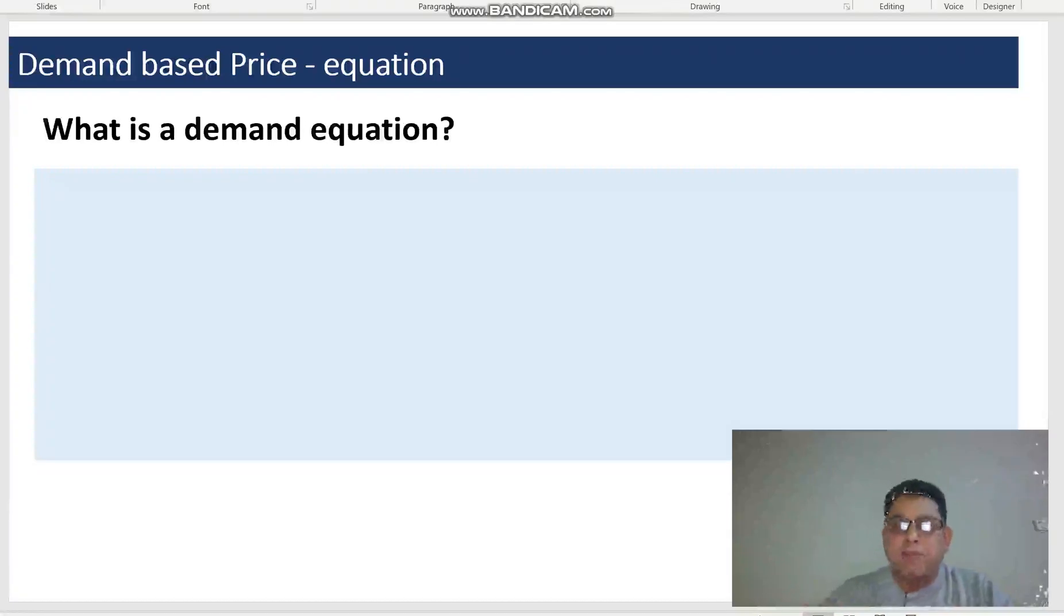So the demand equation is P equals to A minus BQ, whereas A is the price where the quantity equals to zero. Theoretically, we assume that it is the absolute maximum or highest price where there is nobody willing to buy the product at that price.